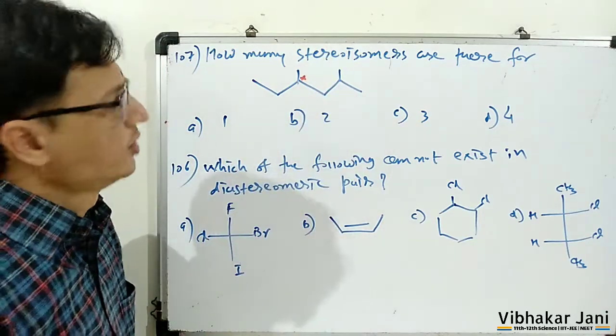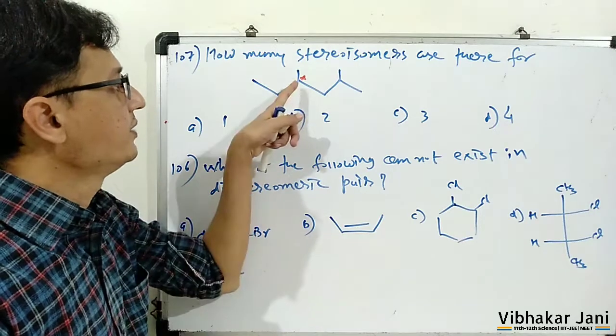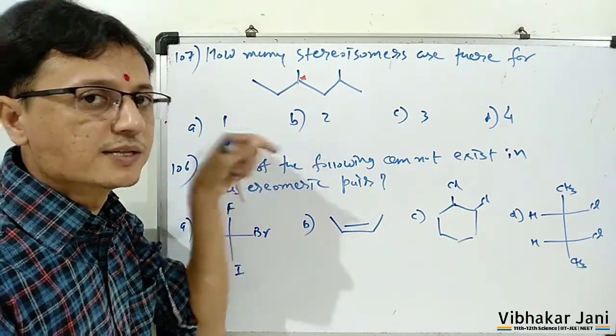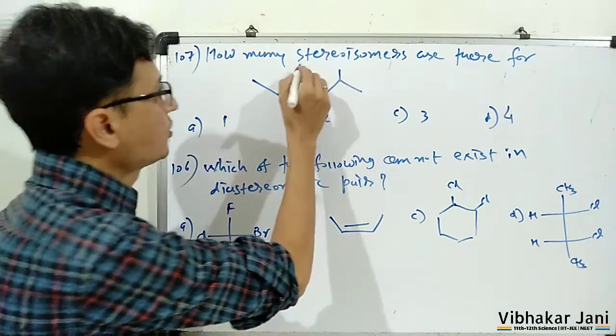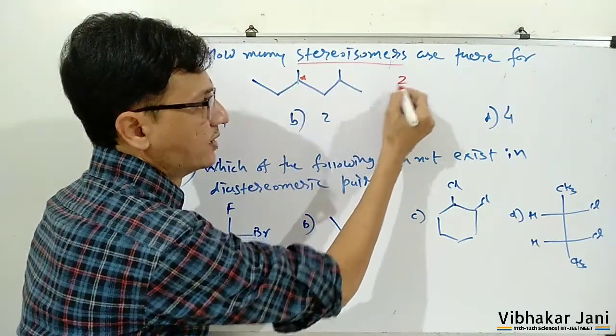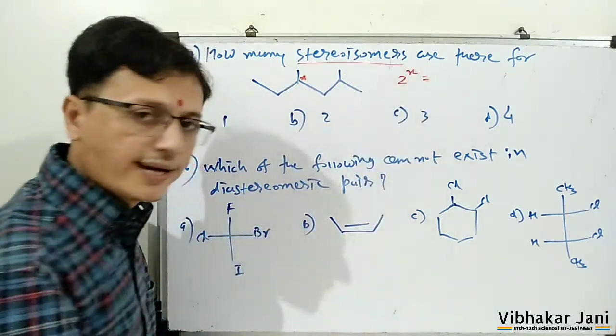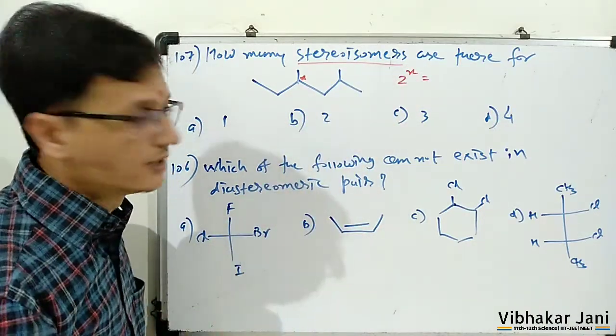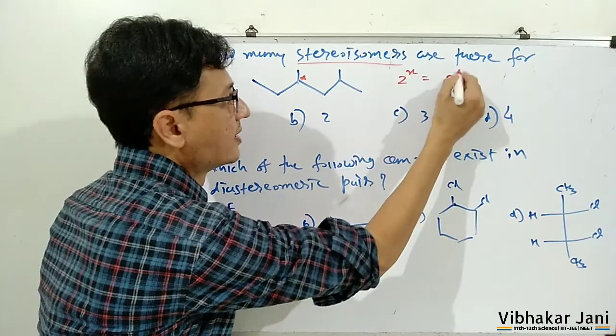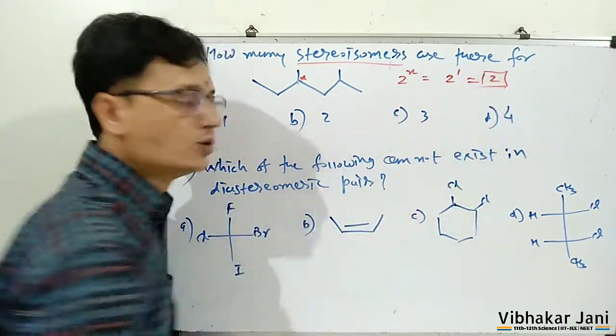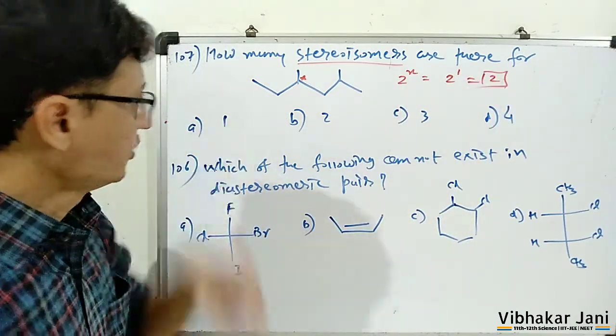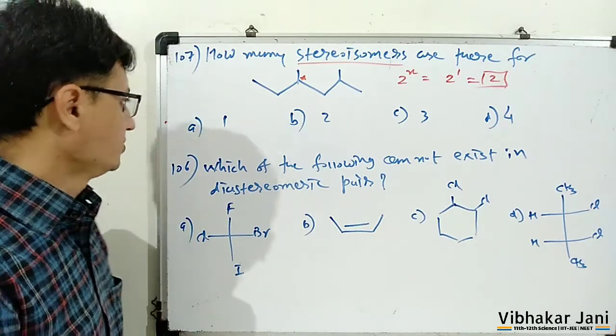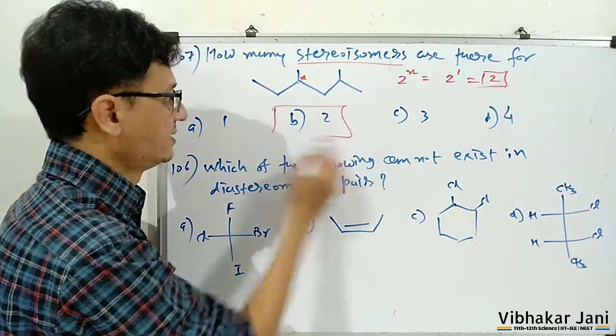Therefore the same functional groups are present so it is also not a stereocenter. So ultimately we are having only one stereocenter present in this molecule. And to find out the total number of stereoisomers, the formula is 2 raised to n, here n is the number of stereocenters. So 2 raised to 1, therefore it is 2. So for this molecule the total number of stereoisomers will be 2, so b is the correct answer for this question.